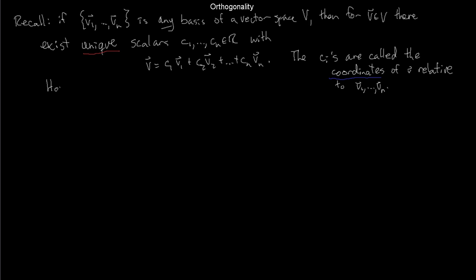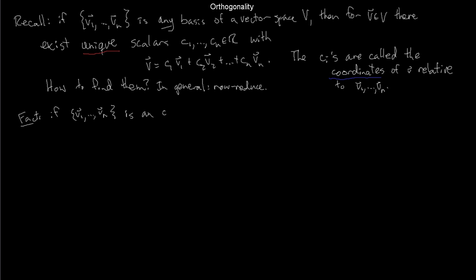A major question is: how do you find the coordinates of a vector relative to a basis? In general, you row-reduce: put the basis vectors as columns of a matrix and solve. But if your basis is orthogonal, it all gets much easier. If I have an orthogonal basis, the i-th coordinate Ci is simply V·Vi — just take the dot product of V with Vi.